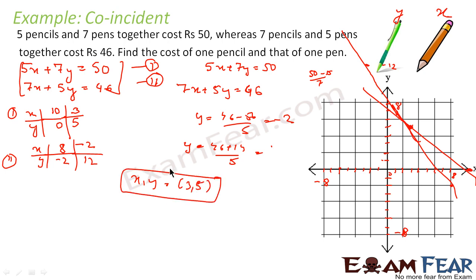The graphical method is a little difficult. I will take you to the algebraic method, which is a little simpler. But here, if you draw the two straight lines, they meet at the point (3, 5). So the cost of one pencil is 3 rupees, and the cost of one pen is 5 rupees.